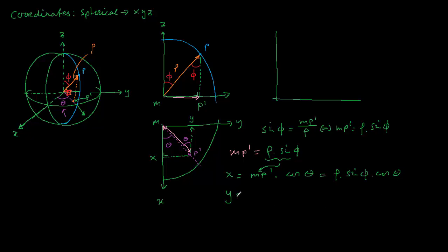More or less the same thing for the y-coordinate. The y-coordinate is this part over here which is the same as that part, and we have here in this angle then the sinus part. So we have M P accent times the sinus of theta is rho times sinus phi times sinus theta, something like that.